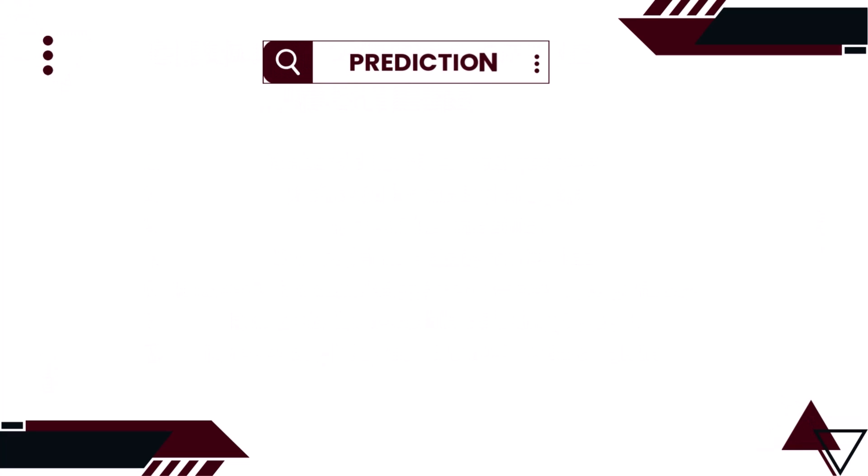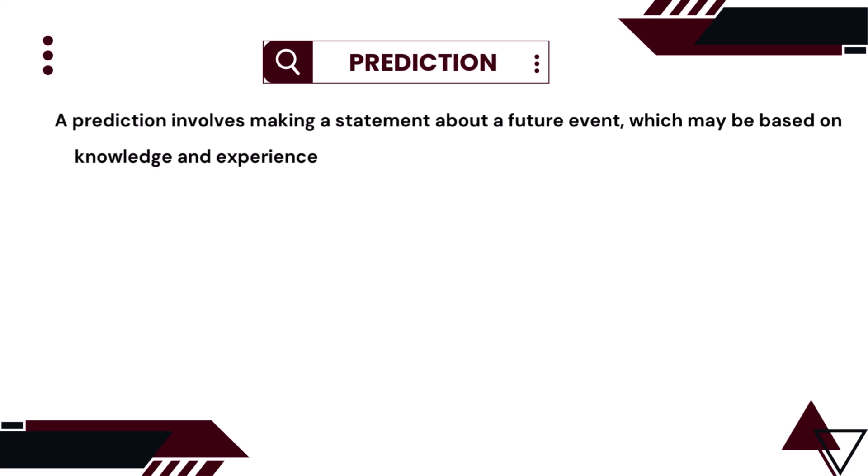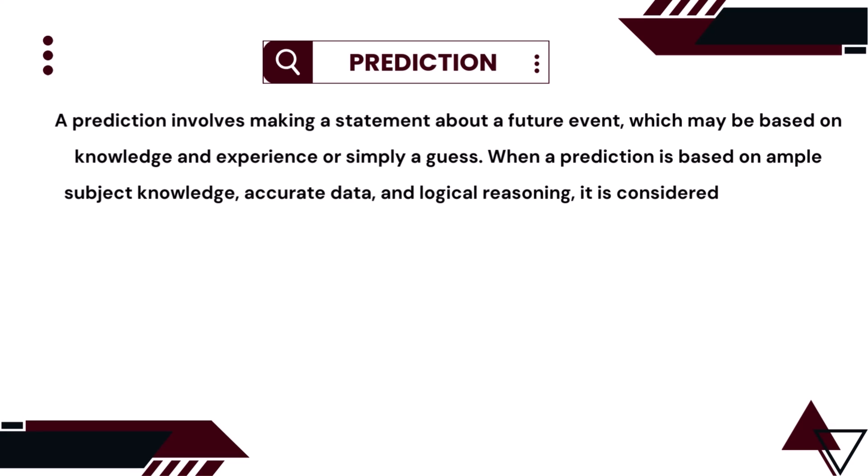What is prediction? A prediction is described as a statement which forecasts a future event, which may or may not be based on knowledge and experience. It can be a pure guess based on the instinct of a person. It is termed as an informed guess when the prediction comes out from a person having ample subject knowledge and uses accurate data and logical reasoning to make it.